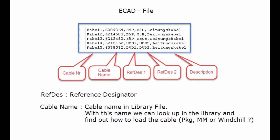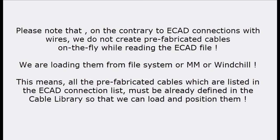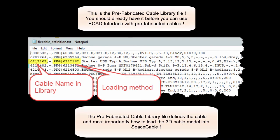The ecat file has five entries: reference designators, which are needed to connect the fixed cable. Note that your fixed cables must already be defined in your cable library. When connecting wires through ecat we create them from zero, but with predefined cables we load them from Model Manager or as a package file.